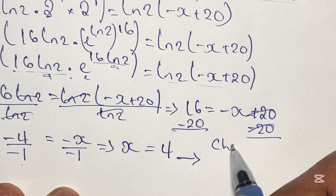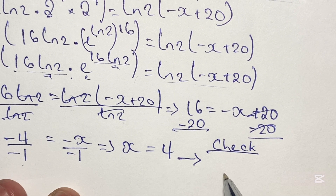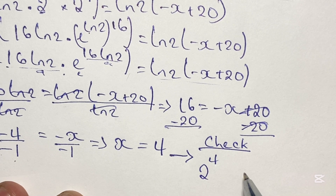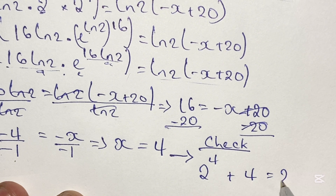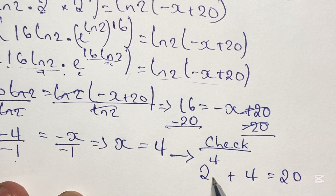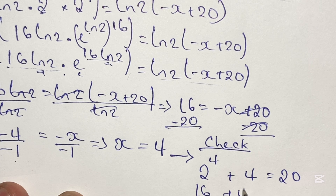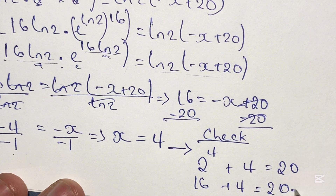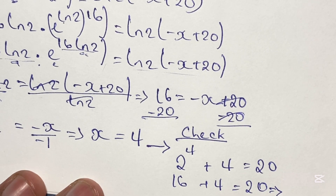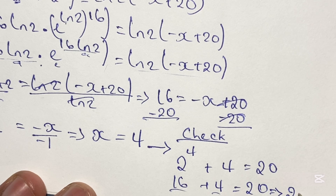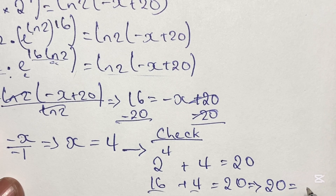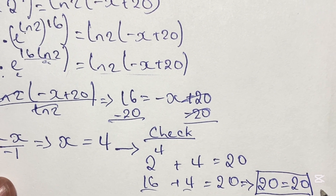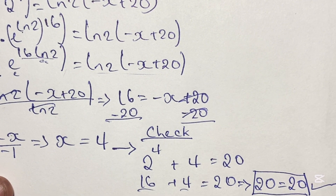Now just to check our solution, we plug the value of x into our original equation. So we have 2 to the power of 4 plus 4 is equal to 20. And now 2 to the power of 4 gives us 16, so we have 16 plus 4 is equal to 20. We know that 16 plus 4 is definitely equal to 20, so as was said at the beginning of this video, x is equal to 4, and here we're actually seeing the actual working out that x is indeed equal to 4.